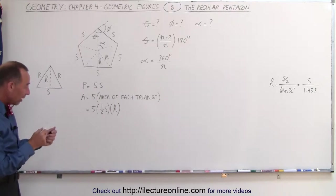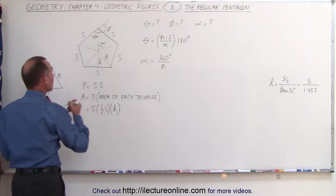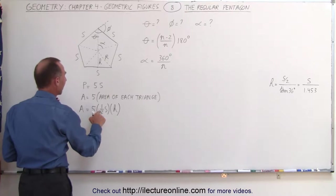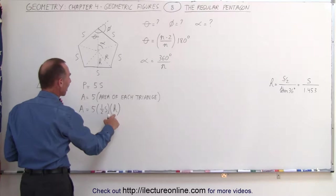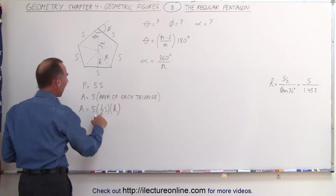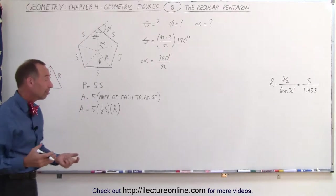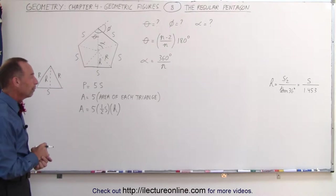The area of the regular pentagon equals five times half the base times the height. Since the base is s, half the base is s/2, so the area equals 5 × (s/2) × h. The only thing left is to figure out what h equals.